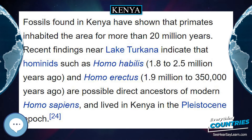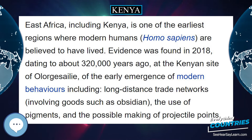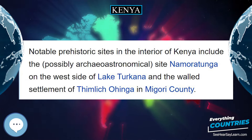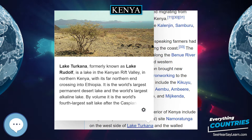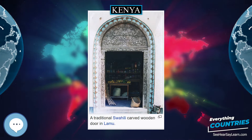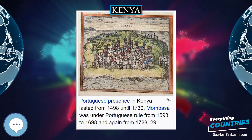Kenya is a presidential representative democratic republic in which elected officials represent the people and the president is the head of state and government. Kenya is a member of the United Nations, World Bank, International Monetary Fund, COMESA, and other international organizations. With a GNI of $1,460, Kenya is a lower middle income economy. Kenya's economy is the largest in eastern and central Africa, with Nairobi serving as a major regional commercial hub. Agriculture is the largest sector; tea and coffee are traditional cash crops while fresh flowers are a fast-growing export. The service industry is also a major economic driver, particularly tourism. Kenya is a member of the East African Community trade bloc, though some international trade organizations categorize it as part of the Greater Horn of Africa. Africa is Kenya's largest export market, followed by the European Union.